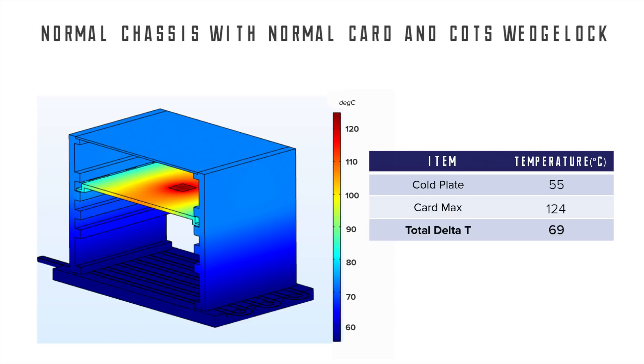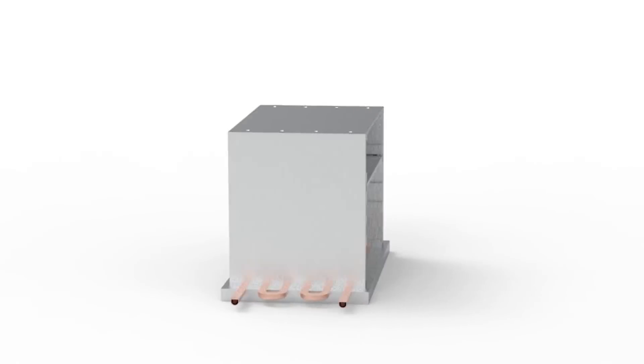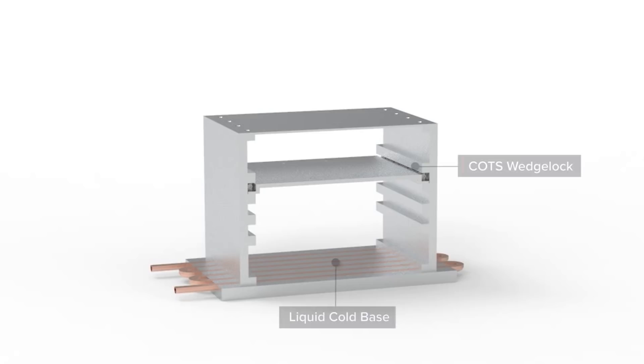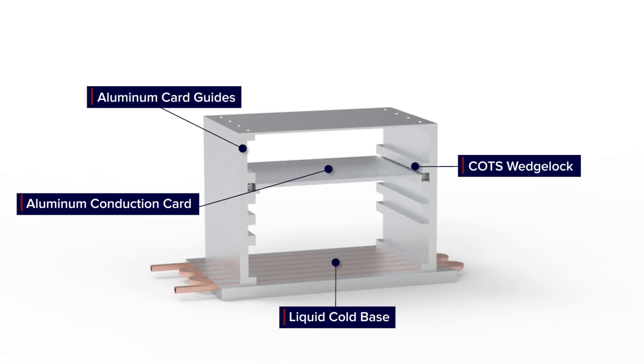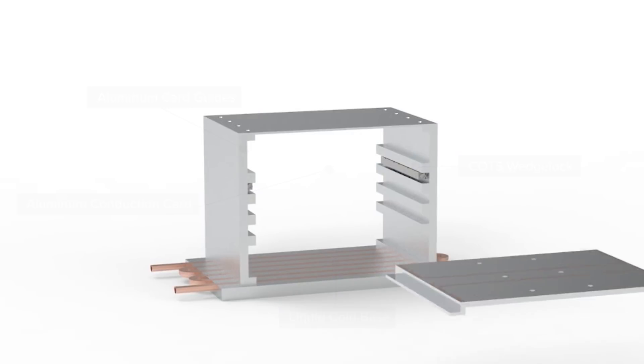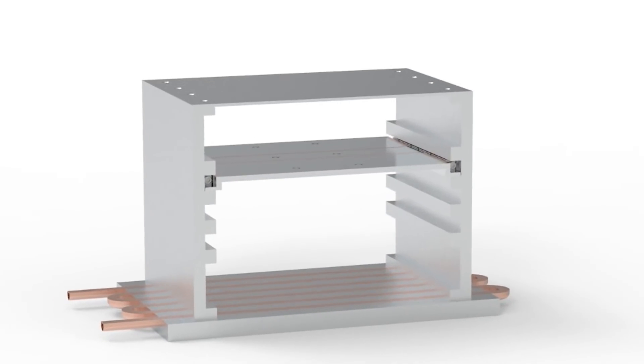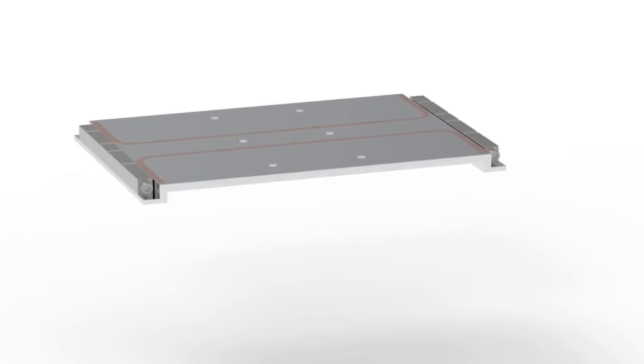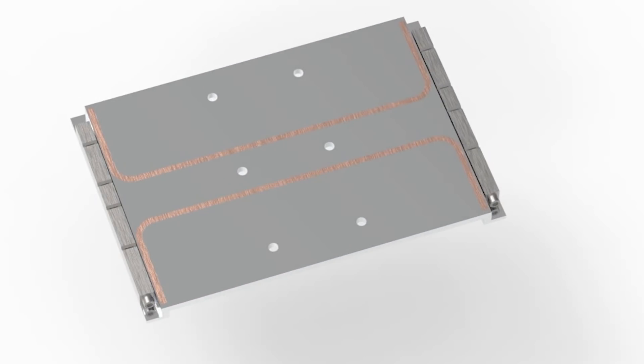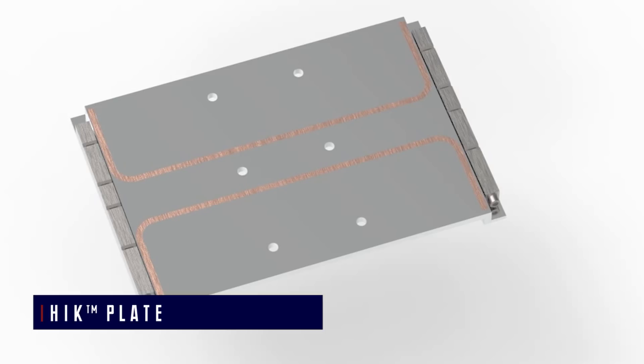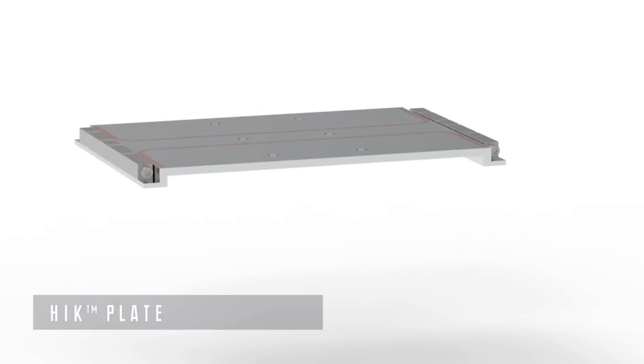Therefore, designers must find a way to reduce the thermal resistance. The largest delta T in the system is from the centralized component to the card edge, which means the design is limited by the thermal conductivity of aluminum. By strategically embedding heat pipes, you can greatly enhance the bulk thermal conductivity of the heat spreader. The resultant embedded heat pipe card frame is known as a high thermal conductivity or high K plate.